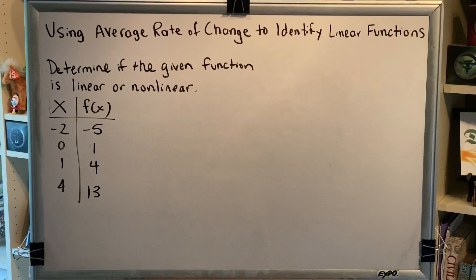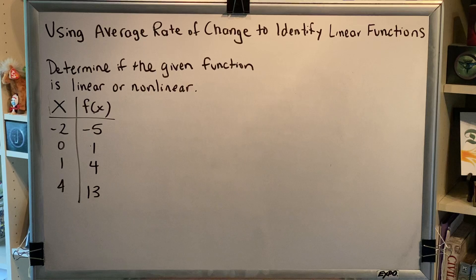The topic of this video is using average rate of change to identify linear functions. When given a table of points, you can determine if the points represent a linear function or not.